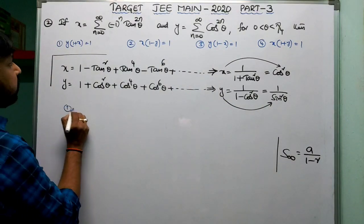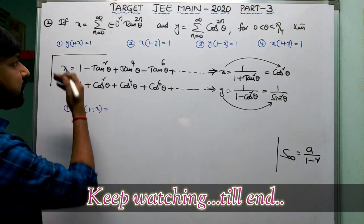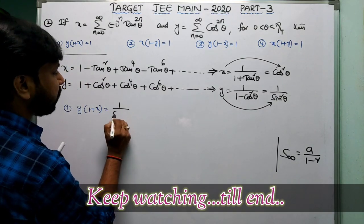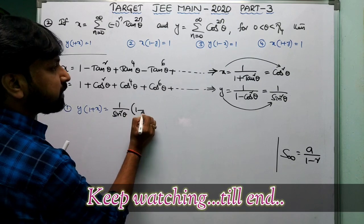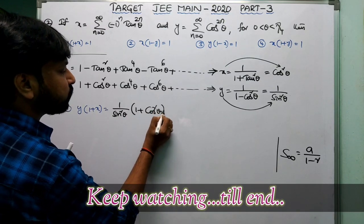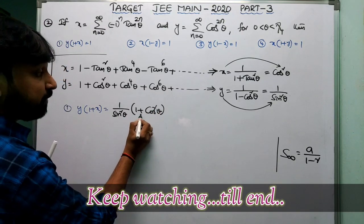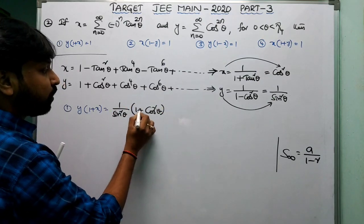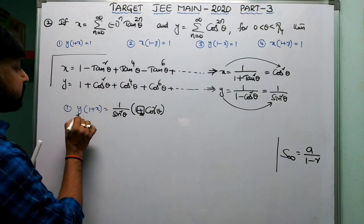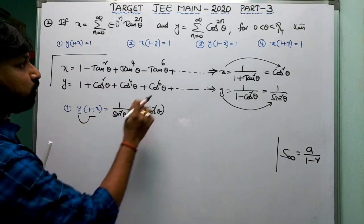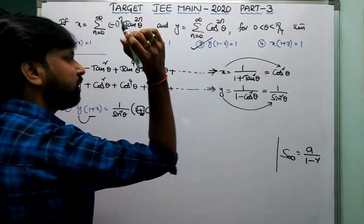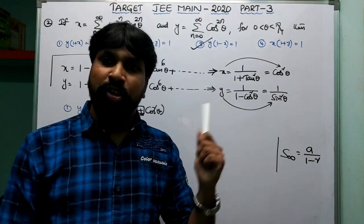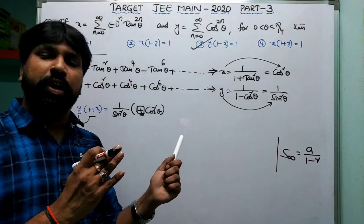Now using option verification: checking option y(1+x) — that gives (1/sin²θ)(1 + cos²θ), which does not simplify to 1. But if we check y(1−x): (1/sin²θ)(1 − cos²θ) = (1/sin²θ)(sin²θ) = 1. So y(1−x) = 1, which means the third option is the correct answer. This is a very very easy question from trigonometry.